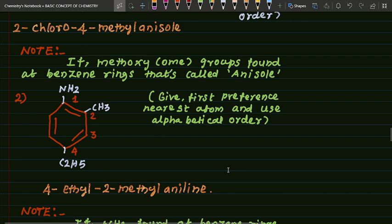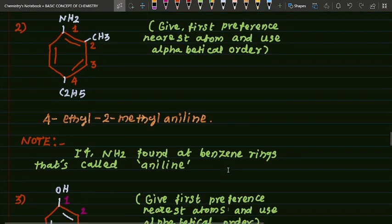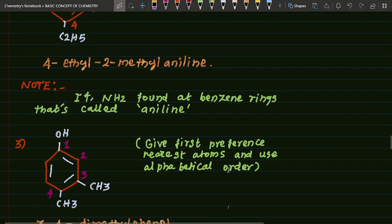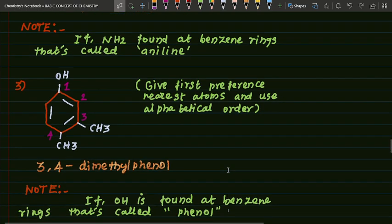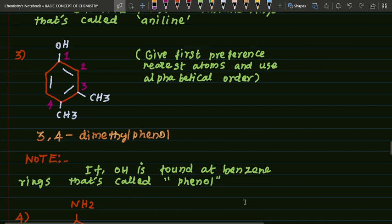Please check the NH2 for suffix and prefix. Note: if NH2 is found at benzene ring, that is called aniline. See next example — the third one. Give first preference to the nearest atom and use alphabetical order: positions one, two, three, four — so 3,4-dimethyl phenol. Note: if OH is found at benzene ring, that is called phenol.